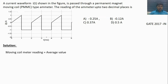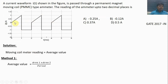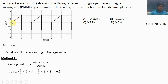For the calculation of the average value, the period of the signal is 2 seconds because the signal starts to repeat every 2 seconds. For method 1, the average value equals area 1 plus area 2 divided by the period, with areas referenced to zero. Here, area 1 is a triangle, and the area of a triangle is half times base times height. The base is 0 to 1 and the height is 1, so area 1 equals 0.5.